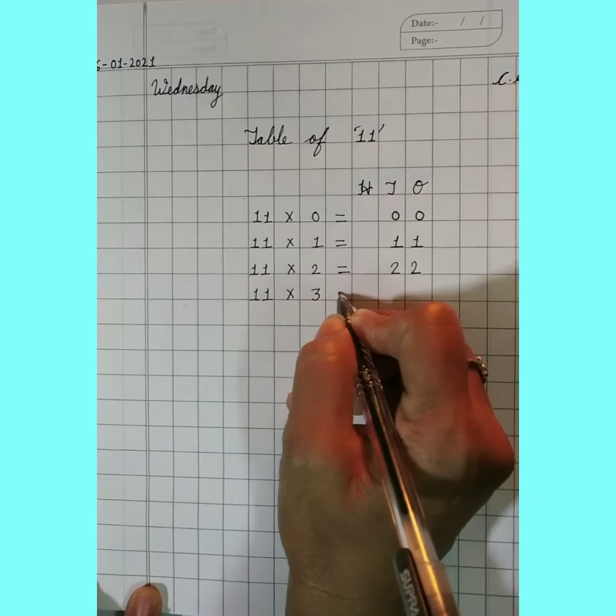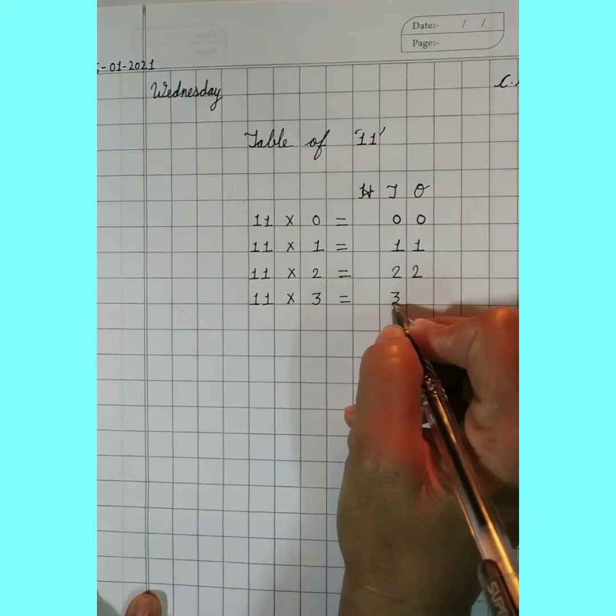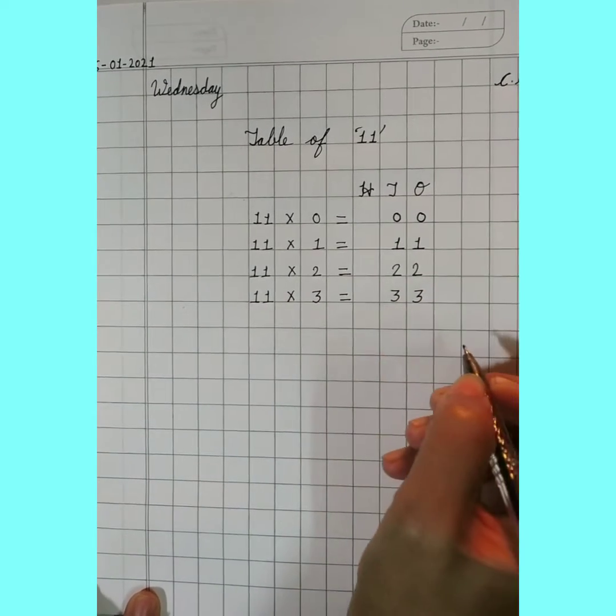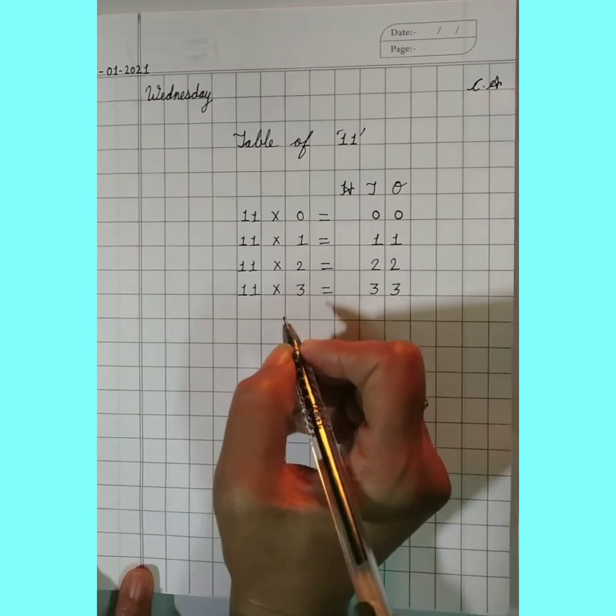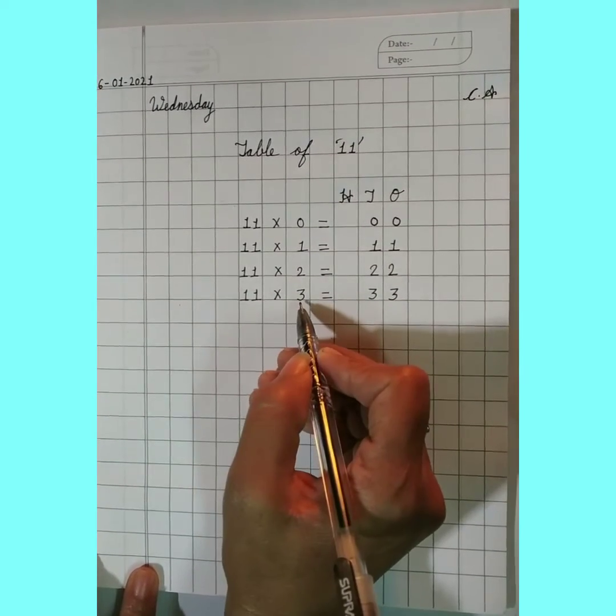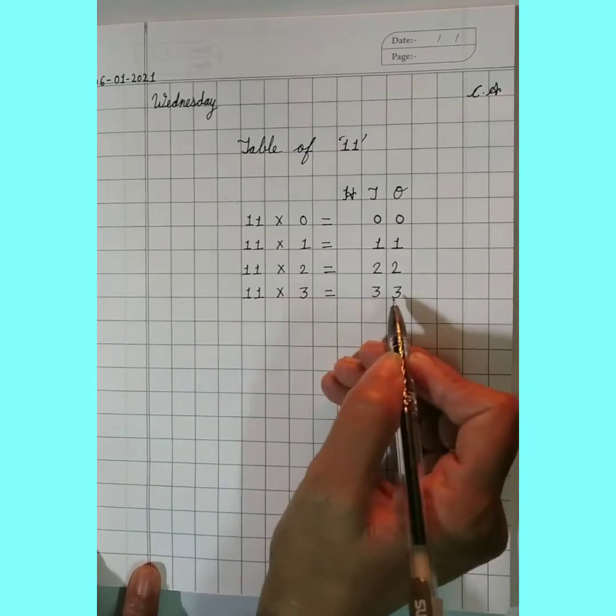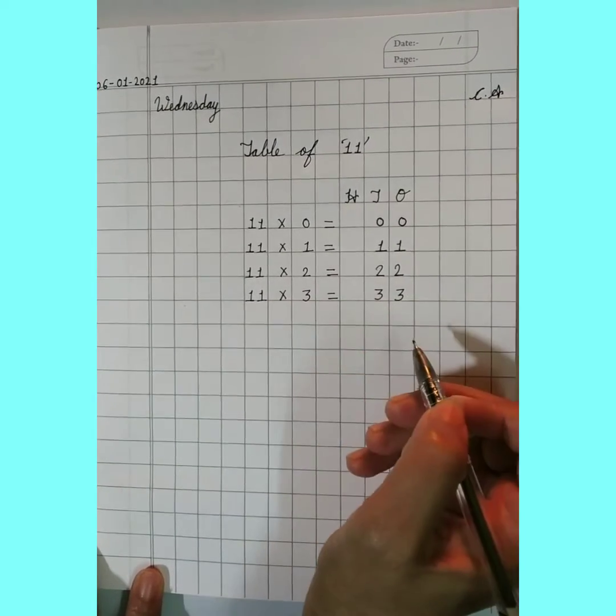11 by 2 equals 22. 11 by 3 equals 33. We have a pattern here. Like 11 multiplied by 3, 3 ones are 3 and 3 ones are 3.